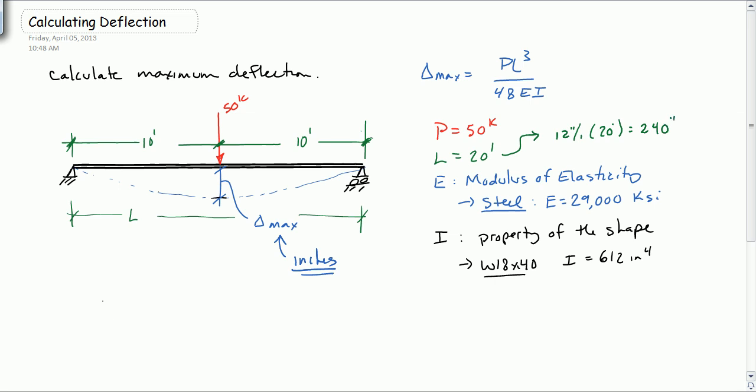Now we can plug this into the equation. Delta is equal to P, which is 50 kips, times L, which is 240 inches. And it's just the 240 that's going to the third power, divided by 48. 48 is a coefficient. It doesn't have any units on it. 29,000 ksi. There's our E and then 612 inches to the fourth. And we look at this and we put it into the calculator and what we come out with is 0.81 inches. So under this load, this particular beam, an 18 by 40, made out of steel, will deflect 8 tenths of an inch at the center line under a 50 kip load.